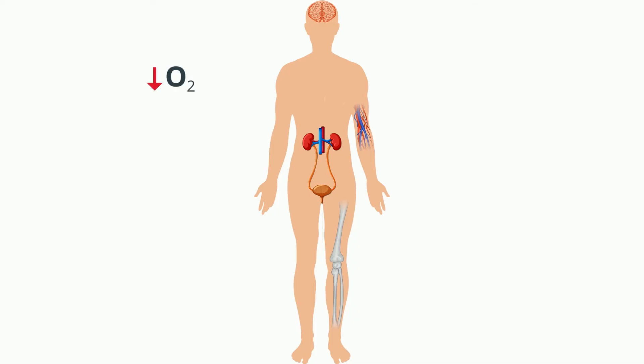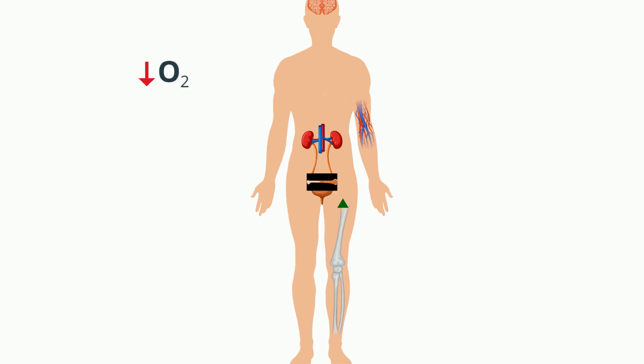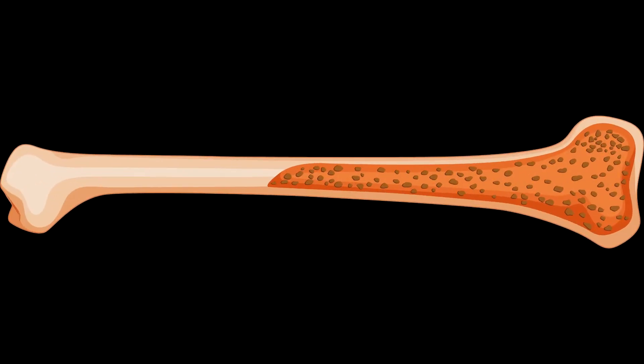A decrease in oxygen is detected by the kidneys, which then secrete erythropoietin. Erythropoietin stimulates the formation of red blood cells in the long bones of adults.